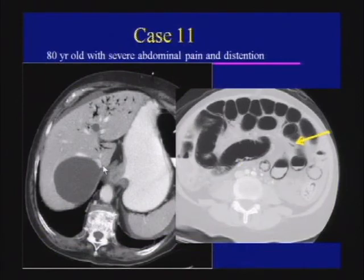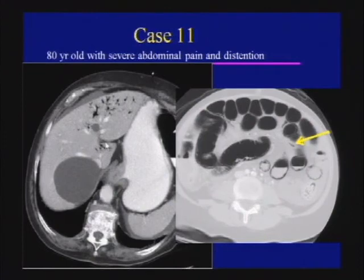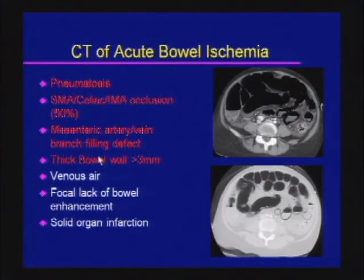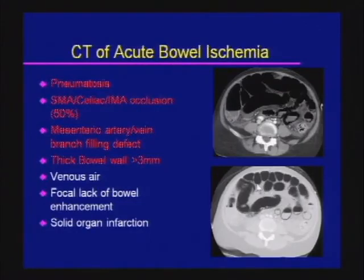The last case: an 80-year-old with severe abdominal pain and distension. The liver shows an odd collection of gas in the crow's feet distribution — in the periphery of the liver, not centrally as expected for pneumobilia. Because of the direction of bile flow, biliary air is central; portal venous gas is peripheral, particularly in the non-dependent portions. Lower images show dilated loops of bowel, mesenteric air, and pneumatosis within the bowel wall — acute bowel ischemia.